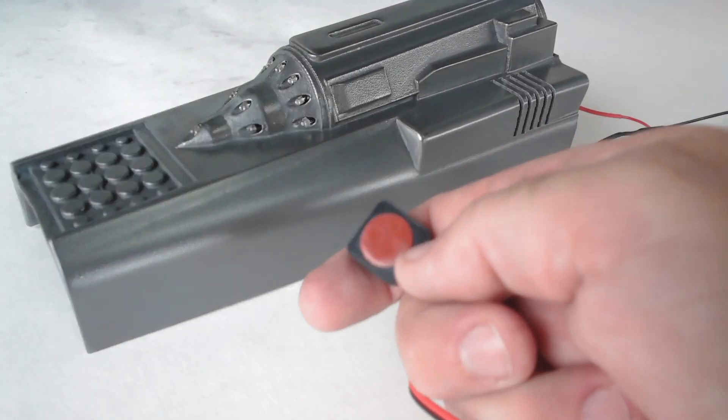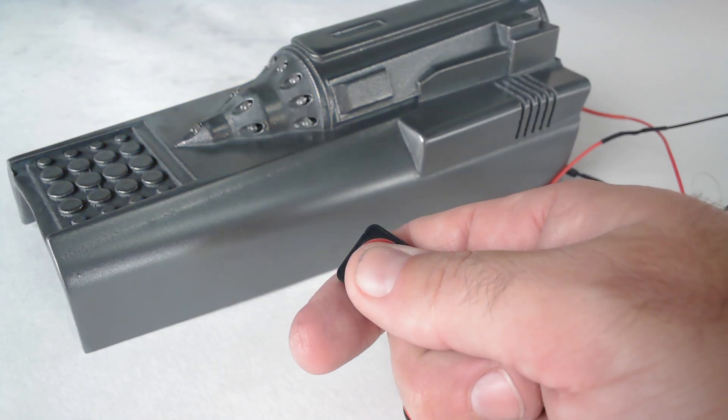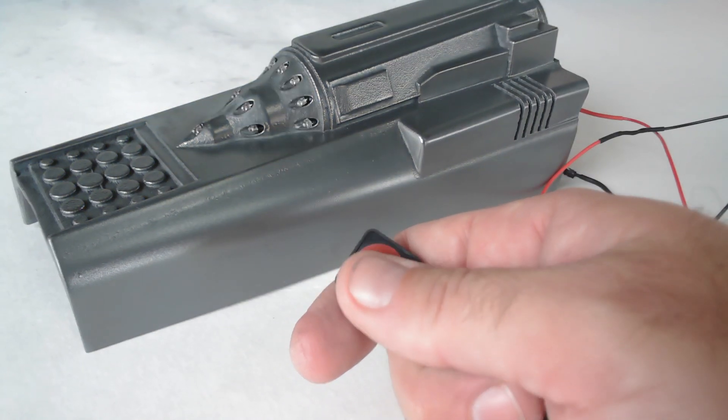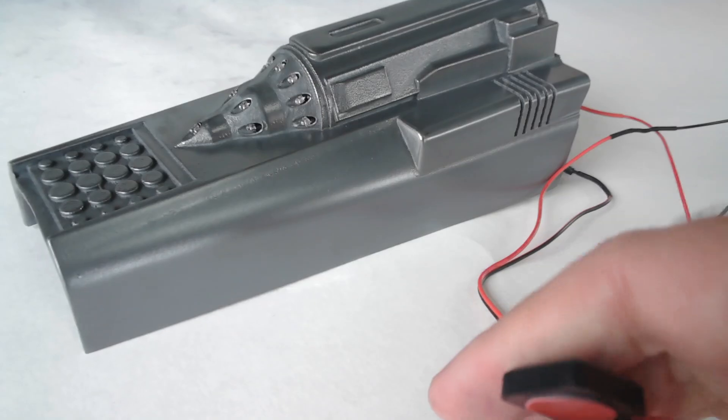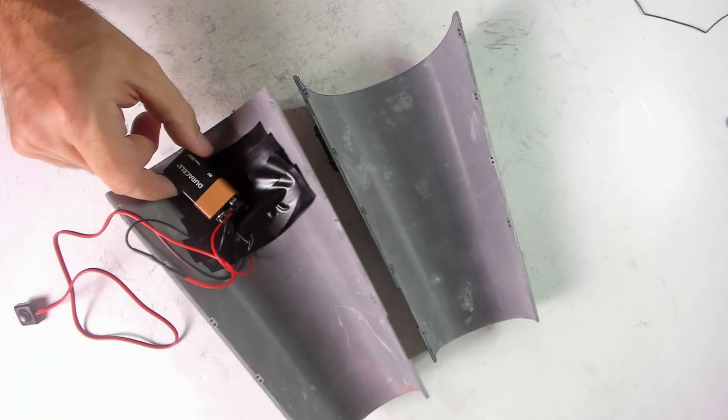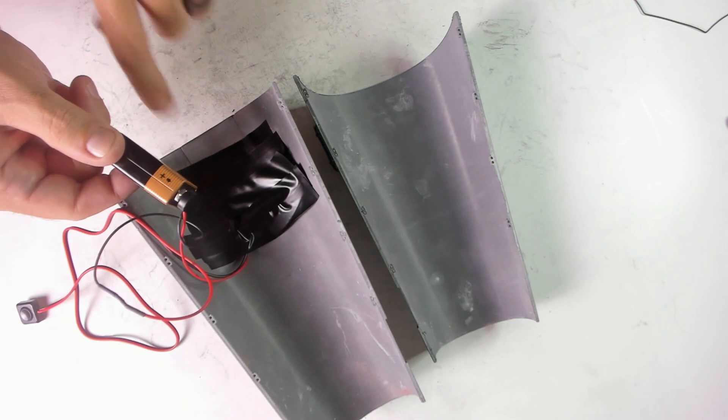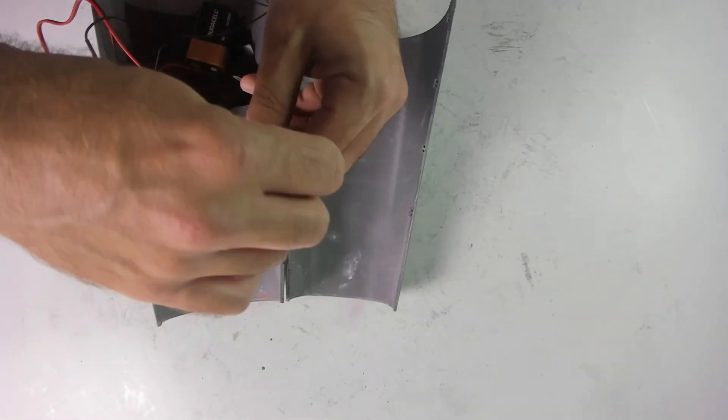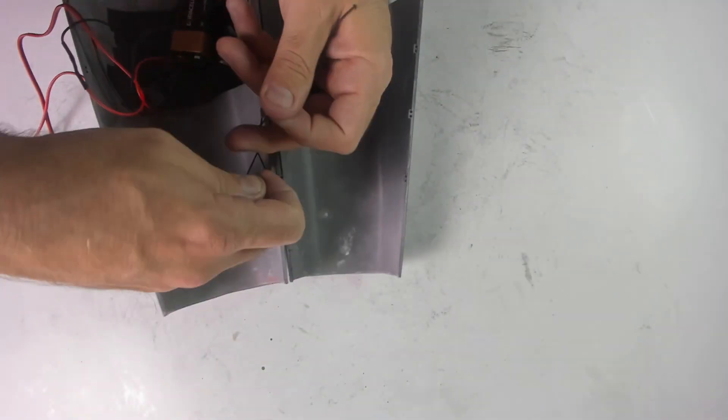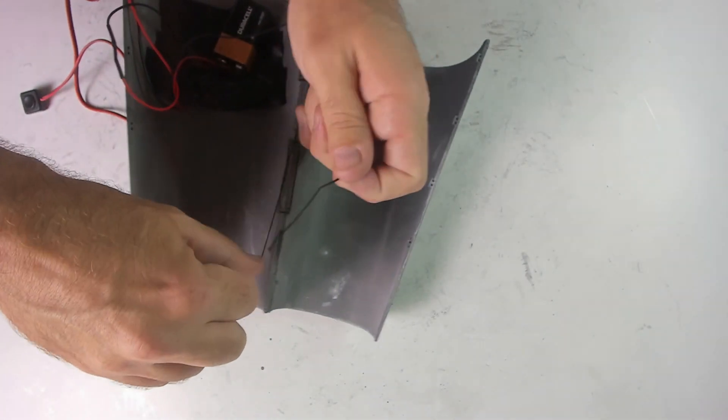I also added this momentary push-button switch so I can control the lights. As I expected, the 9-volt battery didn't fit with all the wires inside. So I ended up cutting the cover and using electrical tape to cover the rest. I'll figure out where to put the 9-volt battery once I start putting the whole suit together.